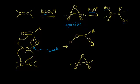Let's color-code these electrons so we can follow them. The electrons in this bond are going to form the bond on the left side between the carbon and the oxygen. The electrons in this pi bond are the ones that form the other side of our epoxide ring. The electrons in the oxygen-oxygen bond are the ones that moved in to form our carbonyl. And the electrons in this bond are the ones that moved out to form the bond between our oxygen and our hydrogen.